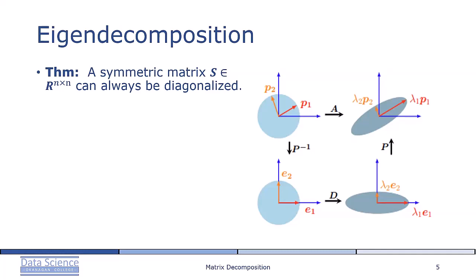Then the diagonal D scales the vectors along these axes by eigenvalues lambda 1 and lambda 2. Finally, P transforms these scaled vectors back into the standard canonical basis coordinates, and that's how we get lambda 1 P1 and lambda 2 P2. And we note that a symmetric matrix S can always be diagonalized.